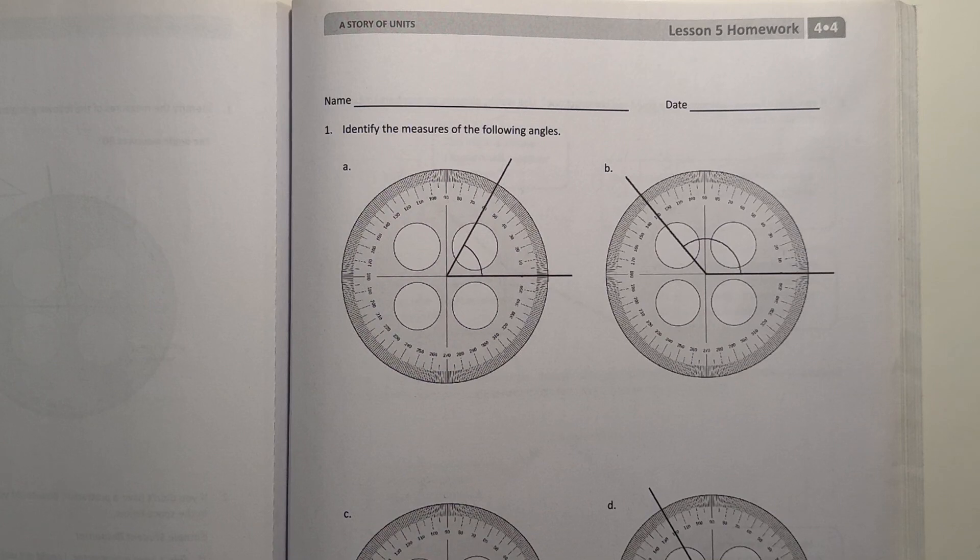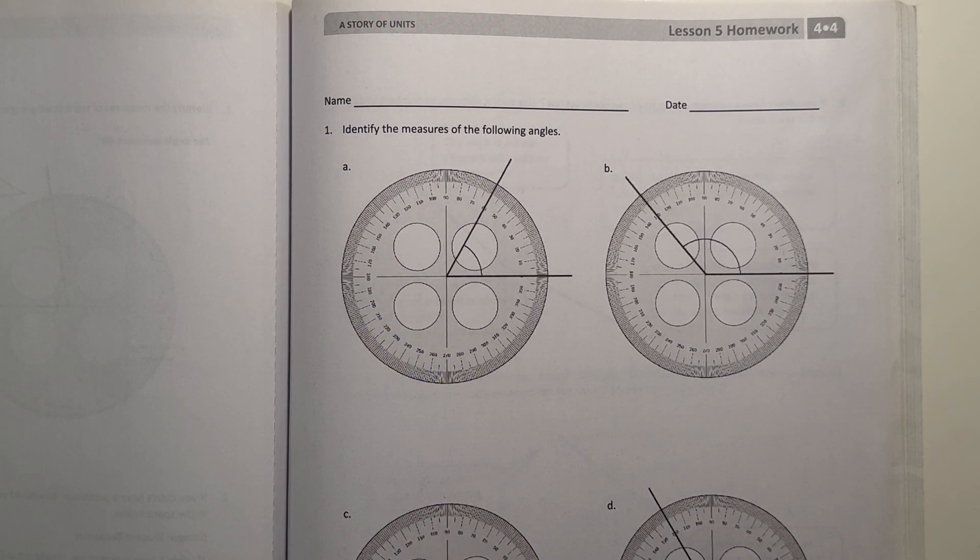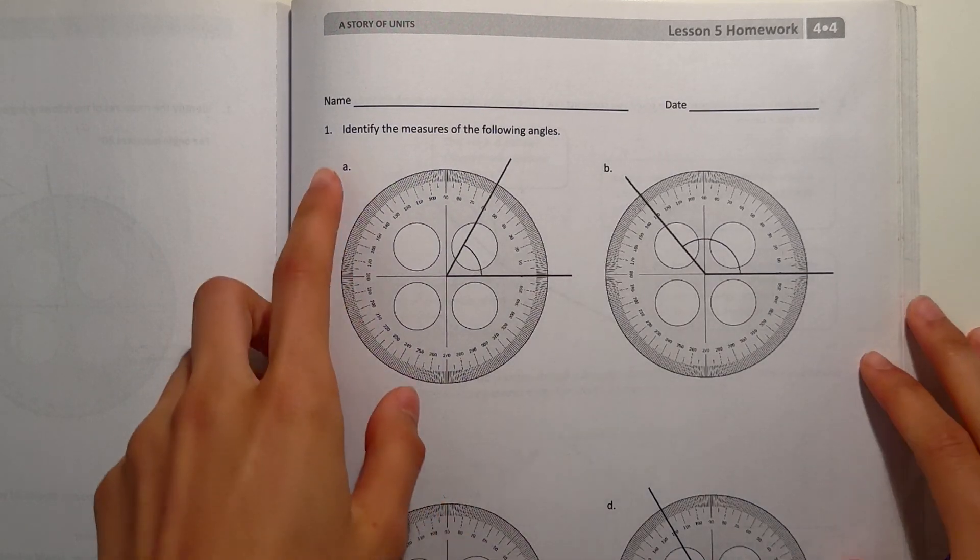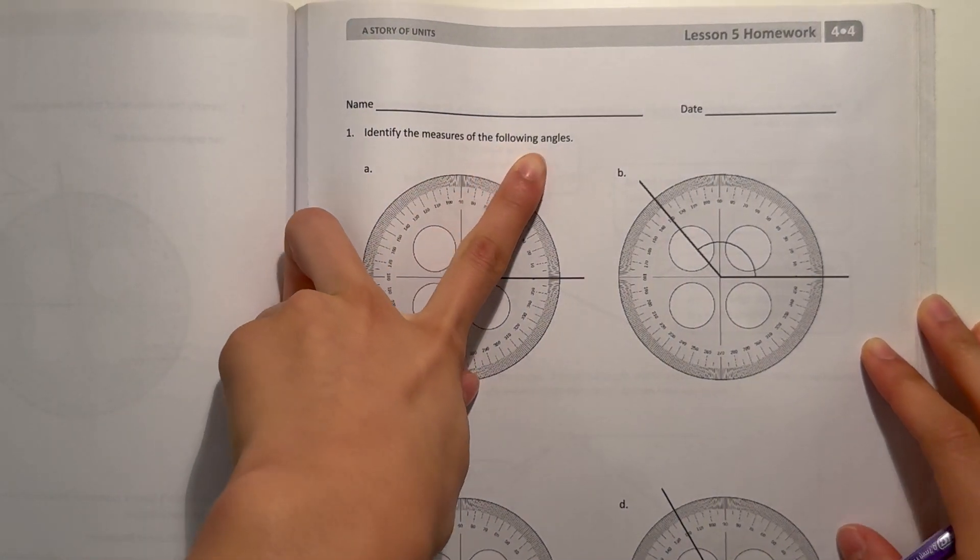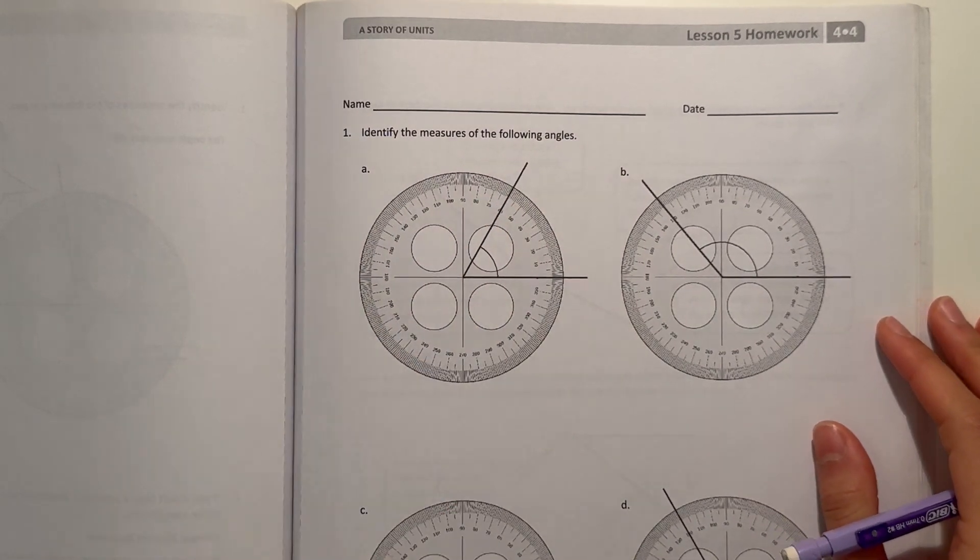Hey guys, are here today I'm doing the Eureka Math Grade 4 Module 4 Lesson 5 homework, so let's get started. Number one, identify the measures of the following angles. All right, so here we're going to start using a protractor.